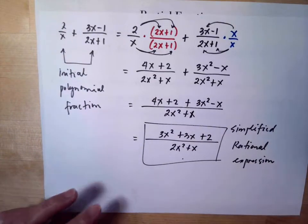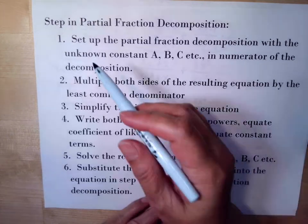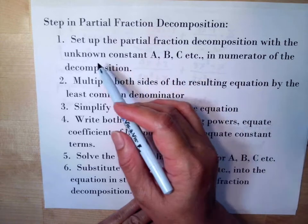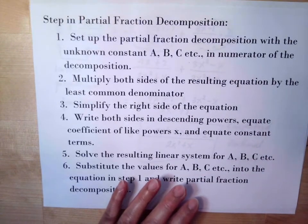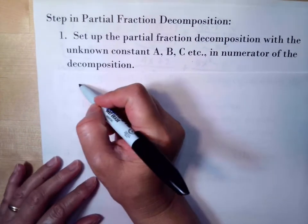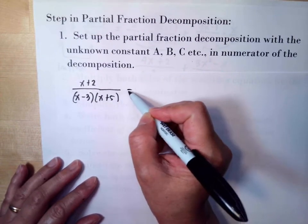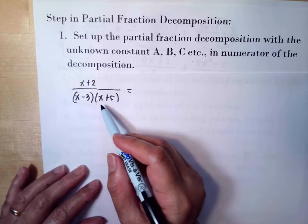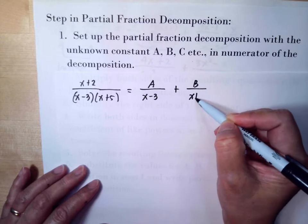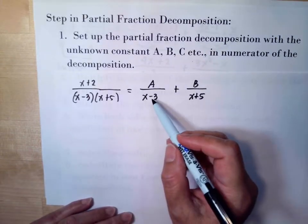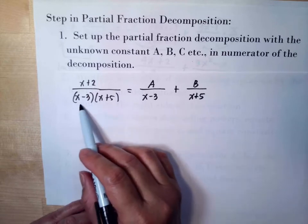Let's study the rules and steps for partial fraction decomposition. Step 1 is to set up the partial fraction decomposition with unknown constants A, B, C, etc. in the numerators. For example, if we have x plus 2 over (x minus 3)(x plus 5), we have two factors in the denominator, so we set it up as A over (x minus 3) plus B over (x plus 5), breaking them based on the denominator.